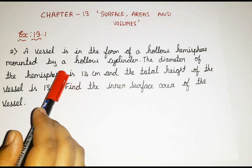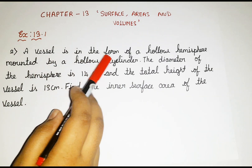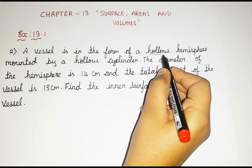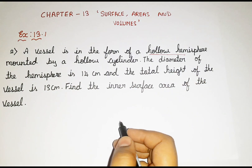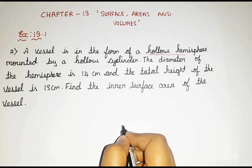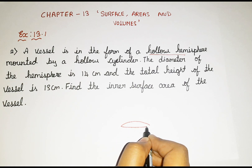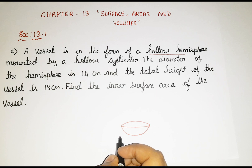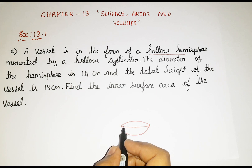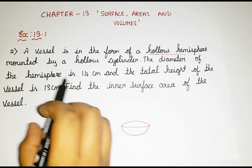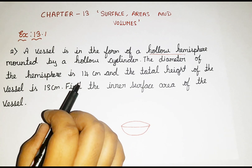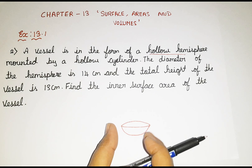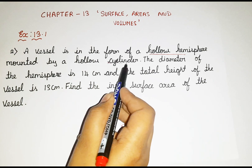Now we are going to read line by line. There is a vessel which is in the form of a hollow hemisphere. Hollow hemisphere means which has space. So what is the shape of a hemisphere? I am doing a rough figure — this is the hollow hemisphere. Mounted means upon that — attached to that particular shape, which here is a hollow cylinder. So we are supposed to draw like this — a cylinder mounted upon the hemisphere.